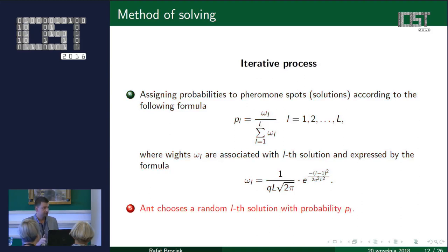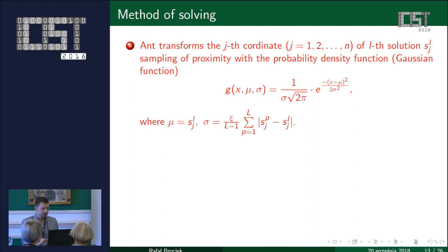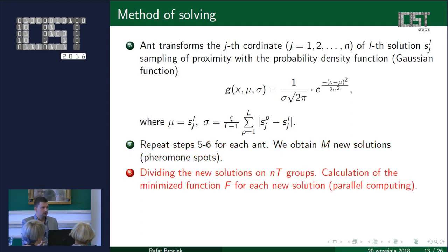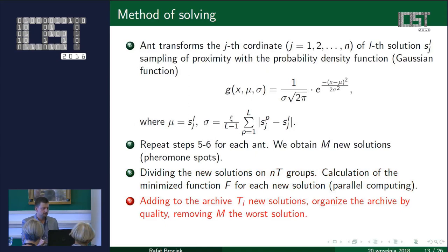The ant chooses one of the solutions with probability pl and tries to find a better solution in the neighborhood, transforming the old solution into a new — possibly better — one using a Gaussian function. We repeat steps five and six for each ant (number of ants is M), obtaining M new solutions. We calculate the value of the minimized function for each new solution, and the worst solution is removed from the set. We repeat this process I times, where I is the number of iterations. In the end, we get the best solution.